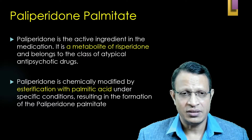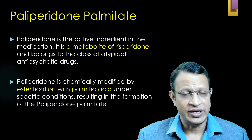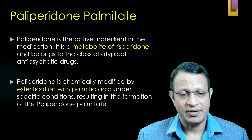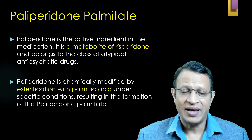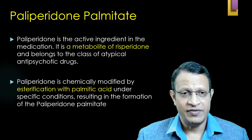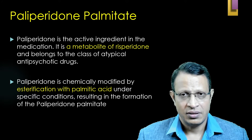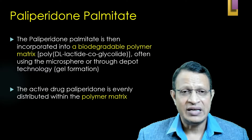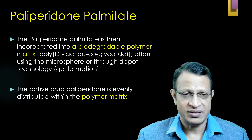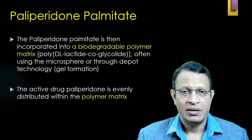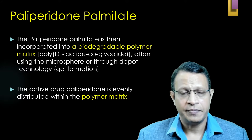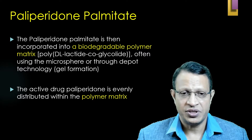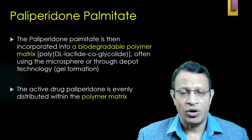Paliperidone is an active ingredient of the medication. Actually, it is a metabolite of risperidone when it is taken. Paliperidone is chemically modified by esterification with palmitic acid. When it is esterified, it becomes paliperidone palmitate. This paliperidone palmitate is then incorporated into a biodegradable polymer matrix called poly-DL-Lactide-Co-Glycolide, often using microspheres or through DIPO technology, i.e., gel formation. The active drug paliperidone palmitate is evenly distributed within the polymer matrix or into the microsphere.